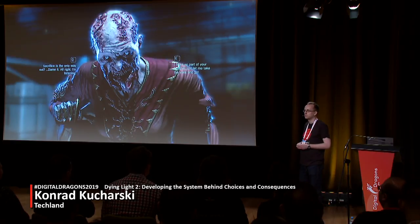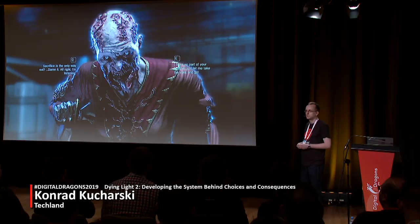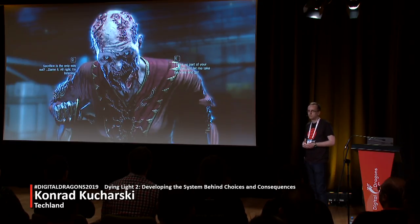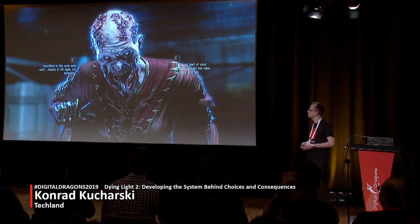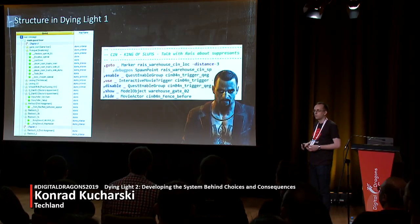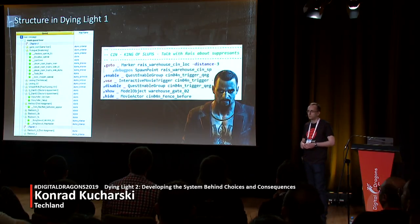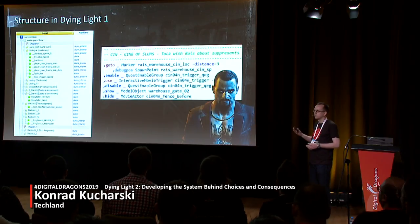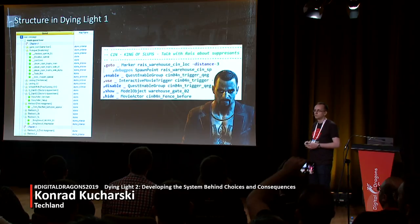It took me about three days to make it work right, because our previous system was created for a linear story. If there was a branch — two alternative paths — the system would follow both paths at the same time. So we had choices but without any consequences. In our previous system, quests were connected in the form of a tree, and quests themselves were pretty much a sequence of things players should do or a sequence of changes that should happen to the world.